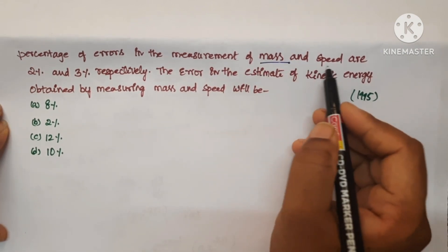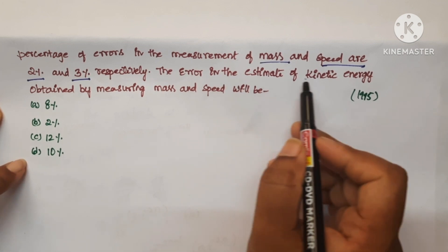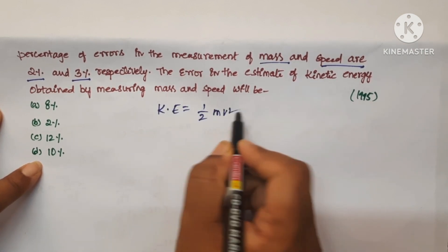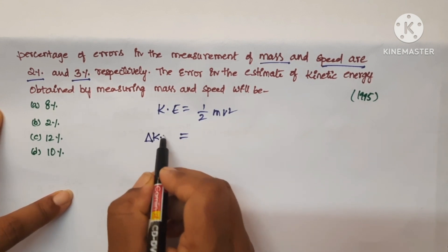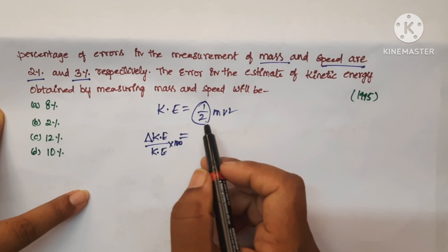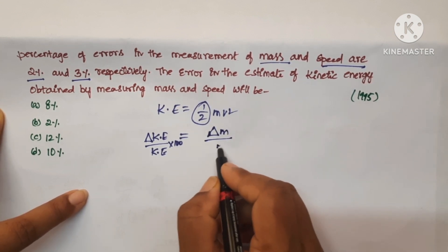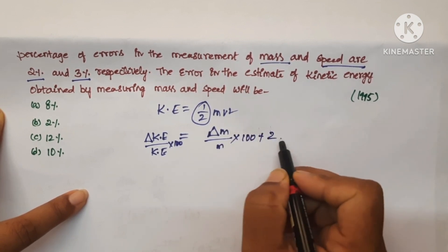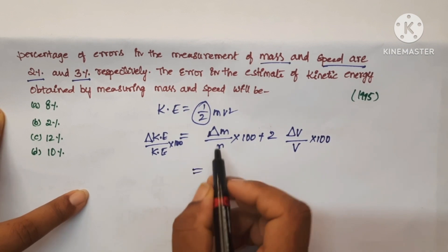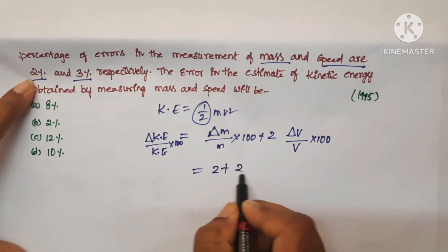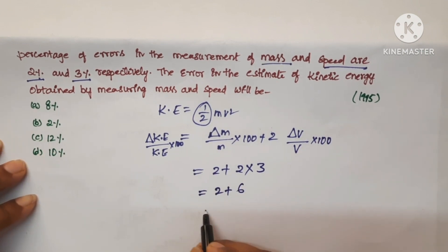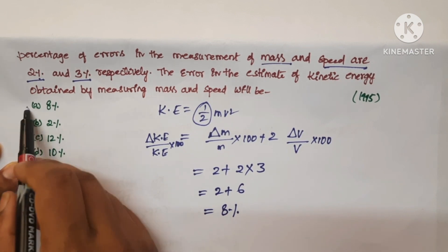Next question: Percentage error in the measurement of mass and speed are 2% and 3% respectively. Error in the estimation of kinetic energy obtained by measuring mass and speed will be. KE = ½mv². So (ΔKE/KE) × 100 = (ΔM/M) × 100 + 2 × (ΔV/V) × 100 = 2 + 2×3 = 2 + 6 = 8%. Option A is the correct answer.